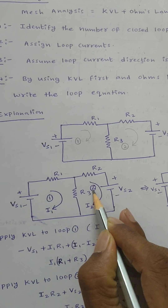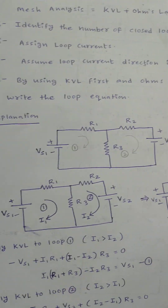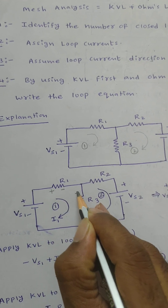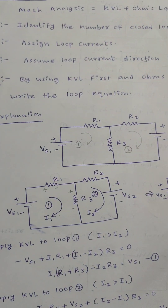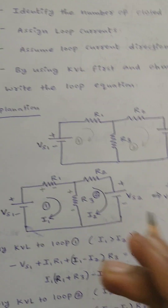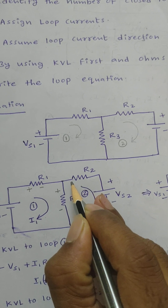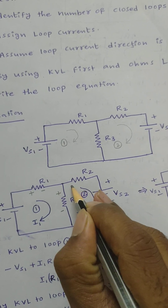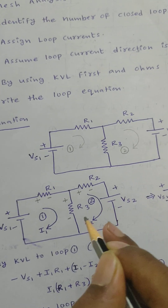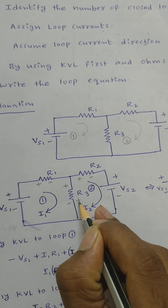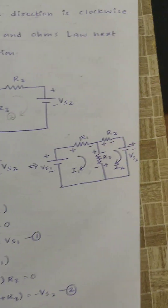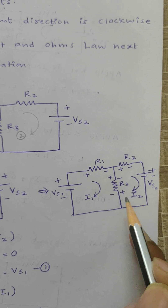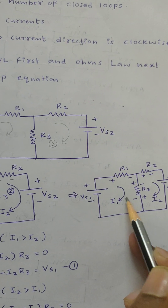Two loops are present here, so apply KVL to loop one. Based on the current direction, polarities across passive elements will be plus-minus, plus-minus. We need to assign polarities for each loop individually. For loop two similarly, give polarities only for passive elements, not for active elements. Now the polarities for loop one and loop two are assigned.